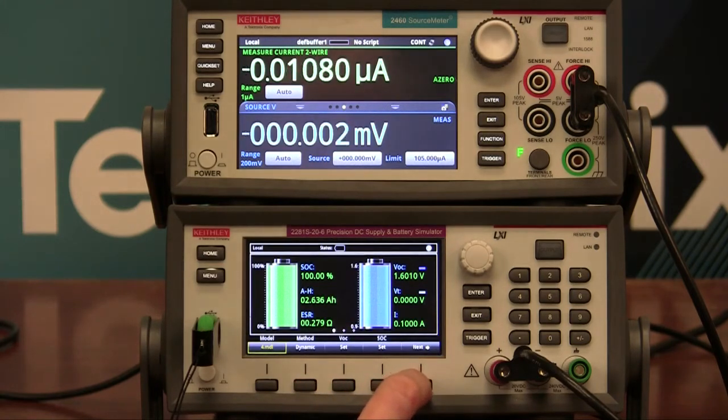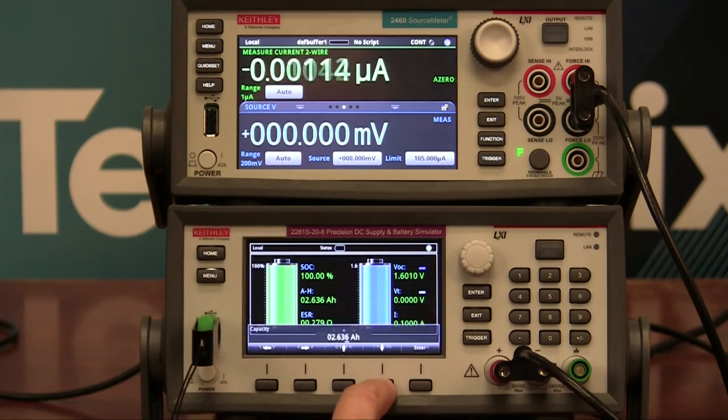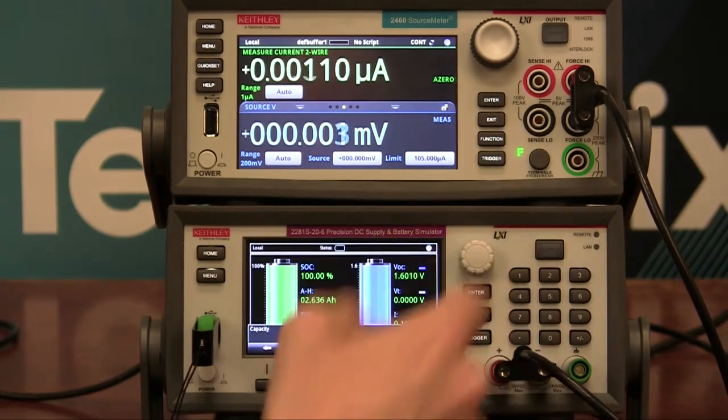And the whole point of this is to set the capacity to be very low so that we can discharge very quickly. From that screen you were just on, press Next down here, and change the capacity to .01 amp hours, so 10 milliamp hours.